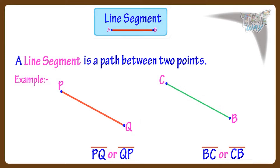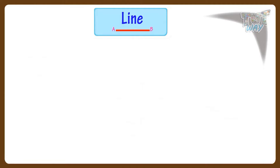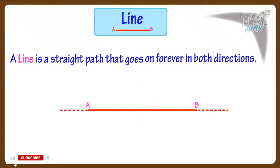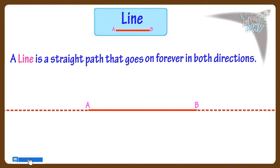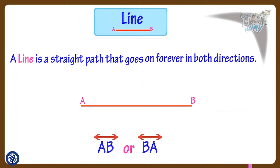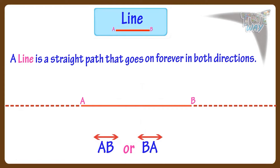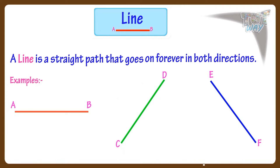Now let's see what is a line. A line is a straight path that goes on forever in both directions. That is, there is no end point on a line, unlike a line segment. This is line AB or BA. The symbol made on top of the name denotes that the line goes on forever in both directions with no end point. Here are more examples of lines and the way we write them.